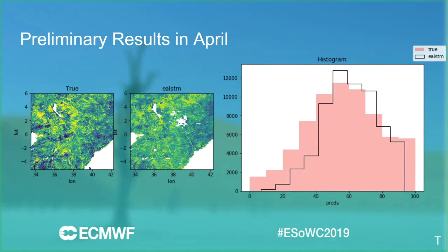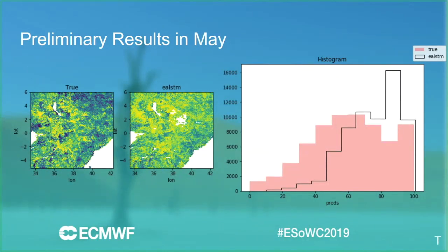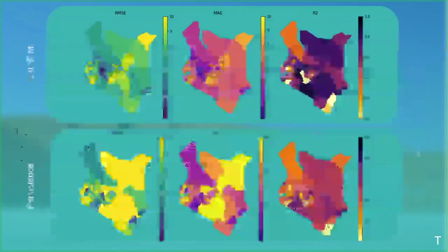These plots show the flexibility of the pipeline — a key takeaway is that it can produce different plots and different bits of analysis. Here we have a comparison of results in April, a month where we perform particularly well. You can see we're under-predicting the low levels, which is probably what's most important for droughts, but we're capturing the shape and spatial patterning. However, performance is not consistent across the year — in May we seem to consistently over-predict the Vegetation Condition Index.